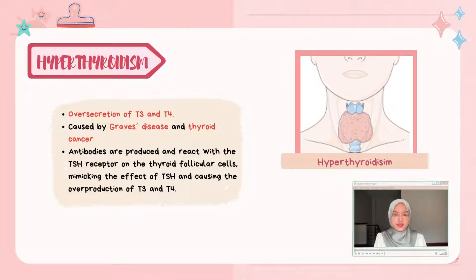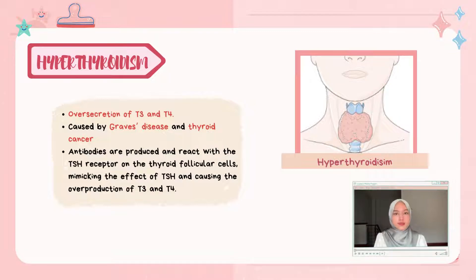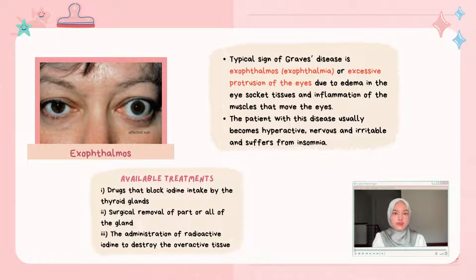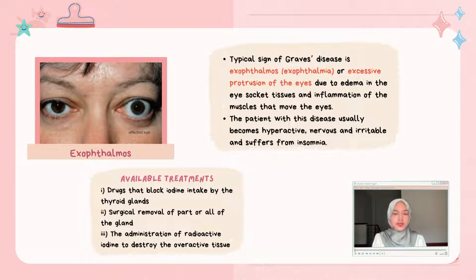Hyperthyroidism is caused by oversecretion of T3 and T4, and can also result from Graves' disease and thyroid cancer. In Graves' disease, antibodies are produced that react with the TSH receptor on thyroid follicular cells, mimicking the effect of TSH and causing overproduction of T3 and T4. A typical sign is exophthalmos — excessive protrusion of the eyes due to edema in eye socket tissues and inflammation of eye muscles. Patients become hyperactive, nervous, irritable, and suffer from insomnia.